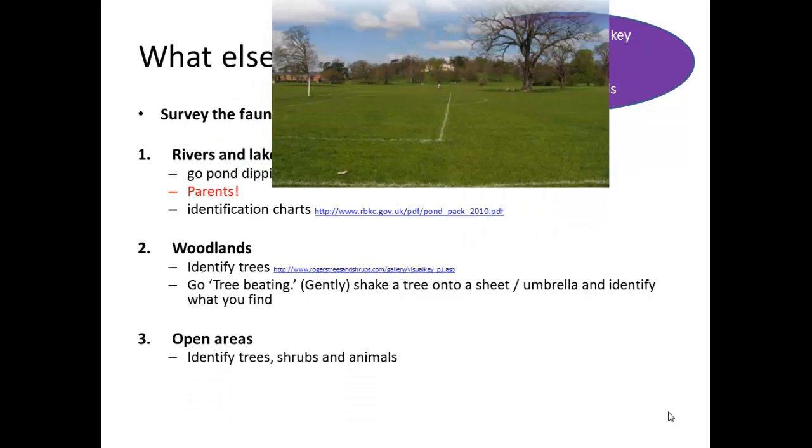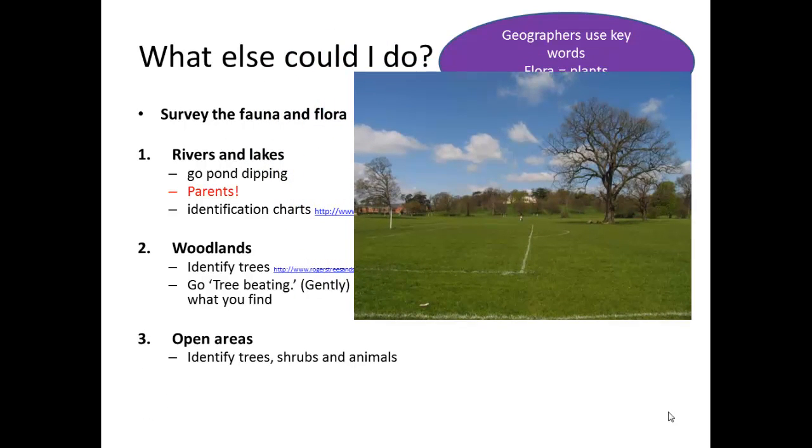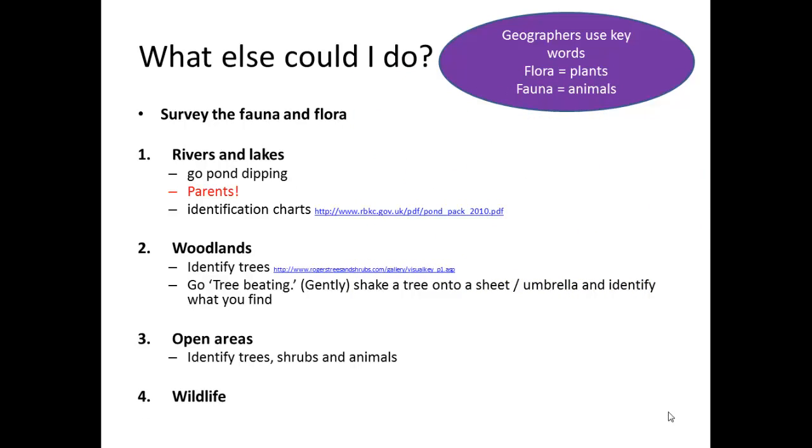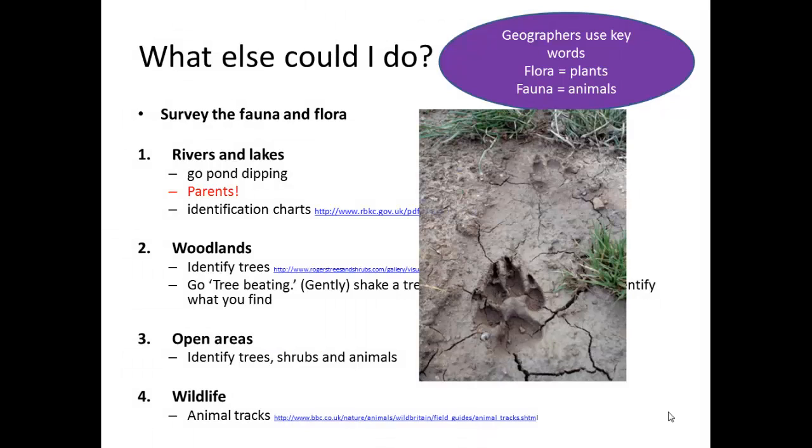When you're looking at open areas you can simply look around you and identify trees, shrubs, animals that you may see in the local area. Make sure that you add labels to photographs to do this. Finally, when you're looking at wildlife it's fun to go out and see if you can find animal tracks in your local area. When you do, here is a good identification guide to identifying the types of animals that you've seen.